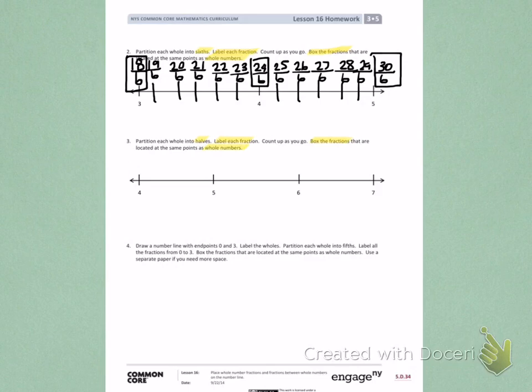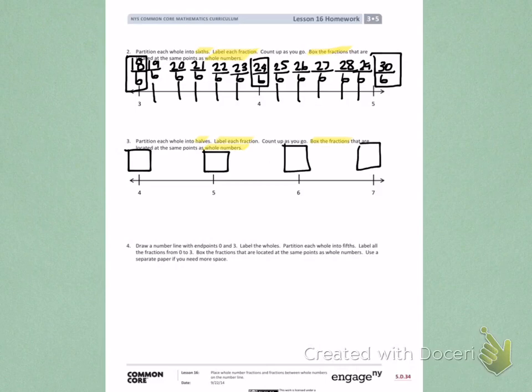On your own, partition each part of the number line in half. Label all the fractions, and put boxes around the fractions that are above the 4 — a whole number — the 5, the 6, and the 7.